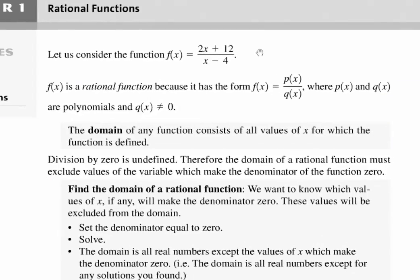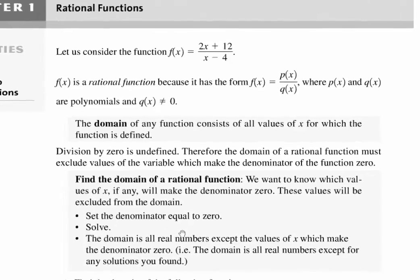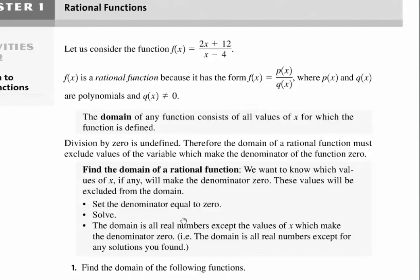I'd like to explore the domain of this rational function. The domain of any function consists of all values of x for which the function is defined. When I think about this rational function, if x equals 4, that would make my function undefined — division by 0 is undefined. So the domain would be all real numbers except x equals 4. A quick way to find the domain for a rational function: set the denominator equal to 0 and solve. The domain is all real numbers except the values of x which make the denominator 0.